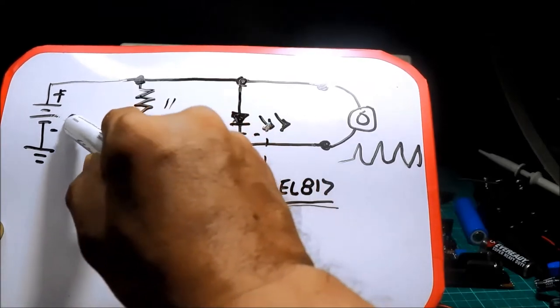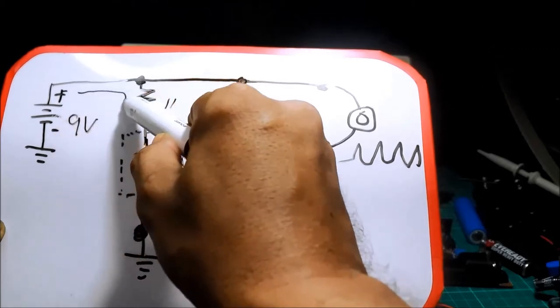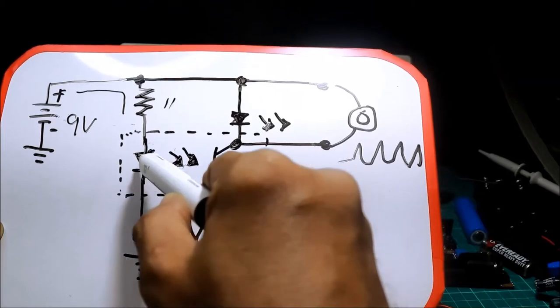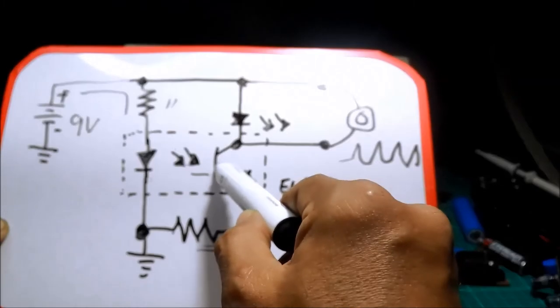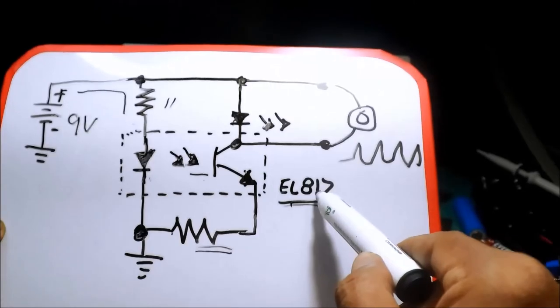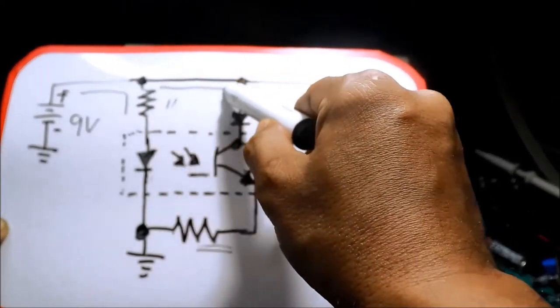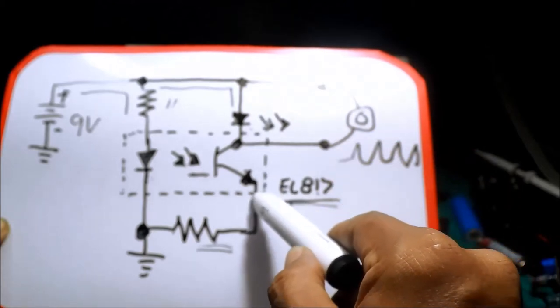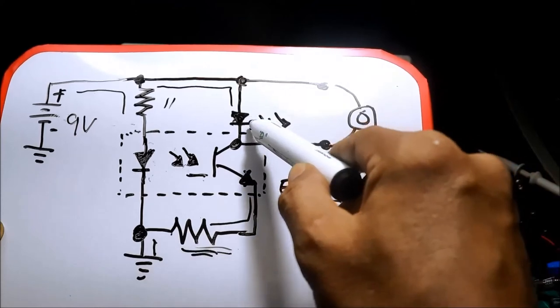Kung ating supply 9 volts, kuryente takbo sa resistor, iilaw yung photodiode kasi mag-switch on, tatamaan yung ilaw sa base ng transistor sa loob ng EL817 optocoupler. Pag nag-switch on yan, pwede ng tokbong kuryente, collector to emitter ng transistor, papunta sa resistor, then to the ground. Kaya siya umiilaw.